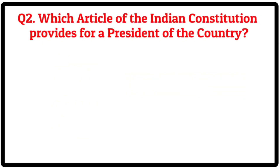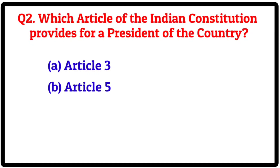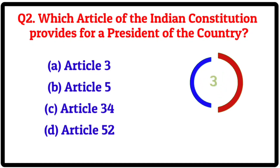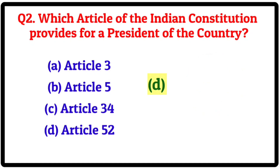Question 2. Which article of the Indian Constitution provides for a President of the country? Option A: Article 3. B: Article 5. C: Article 34. D: Article 52. Correct answer is D: Article 52.